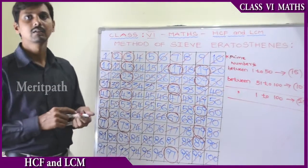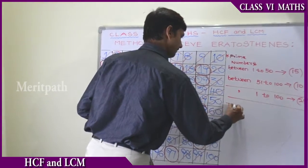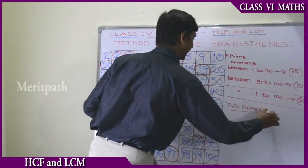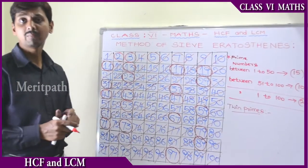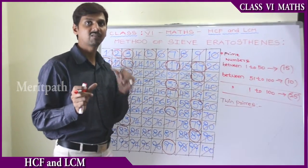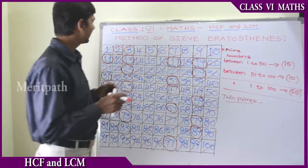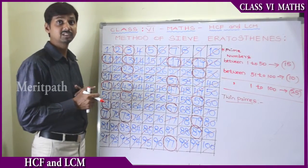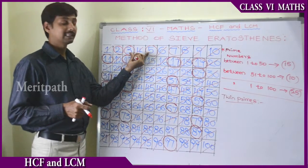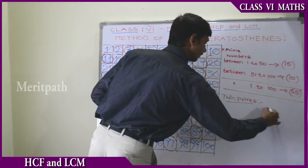Let's see the concept of twin primes. Twin primes are those numbers where the difference between the two prime numbers is 2, then we call them twin primes. So 3 and 5 are twin primes because 5 minus 3 is equal to 2.